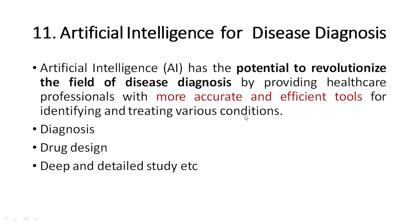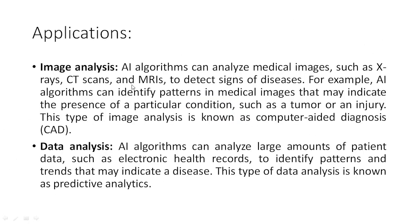The basic thing is we need to identify and detect the disease properly, accurately, and efficiently, so that we can give treatment effectively. It will be helpful for diagnosis, early detection, and drug design — which we discussed in the previous class. AI will be helpful for all these applications.